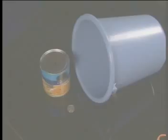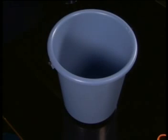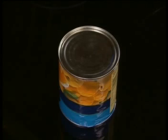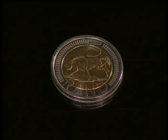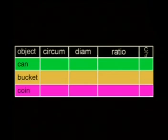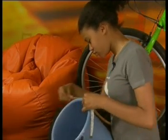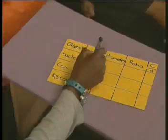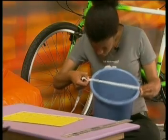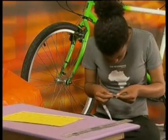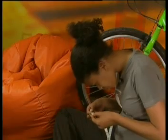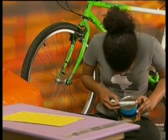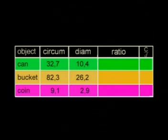I've asked Zandi and Tabeca to measure a bucket, a can, and a five-rand coin, and place these values into a table. Zandi measured the circumference of each object with a measuring tape. Tabeca put this information into a table. Then Zandi used the same measuring tape to measure the diameter of the objects and read off the lengths. Here's a table with all the information they found.